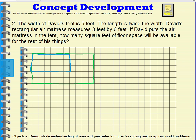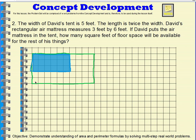To show the remaining floor space, I shade in where the air mattress is. If David puts the air mattress in the tent, how many square feet of floor space will be available for the rest of his things? We can count the remaining unshaded squares: counting all 32 squares. So 32 square feet of floor space will be available.